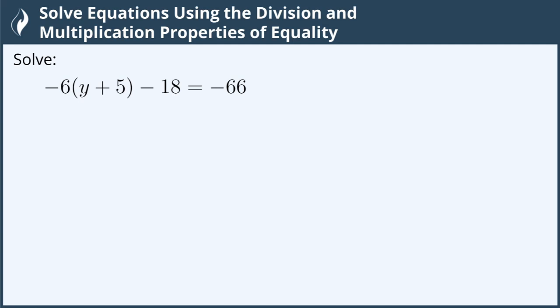Hi! In this video, we're going to solve the equation negative 6 times y plus 5 minus 18 equals negative 66. Now we're trying to solve for the y here, which is inside of these parentheses, and we'll do that by distributing our negative 6.